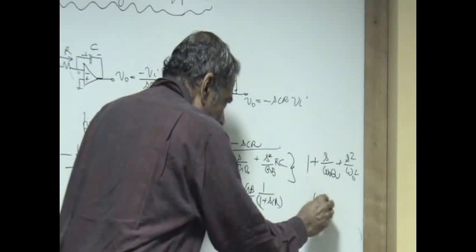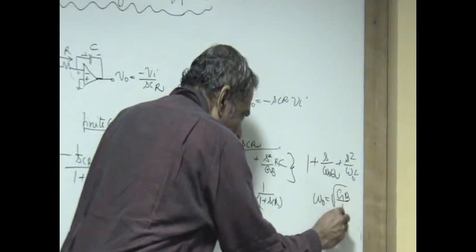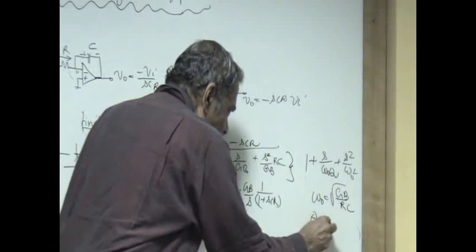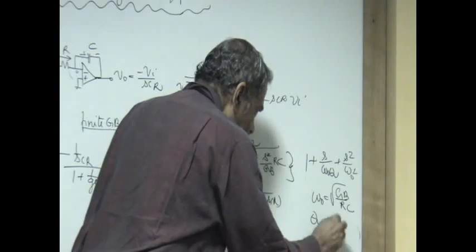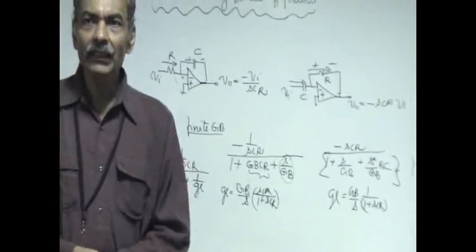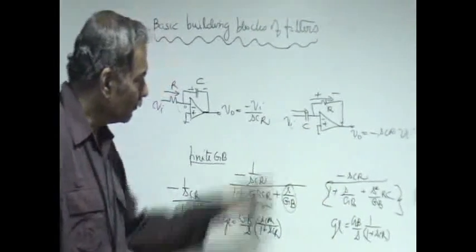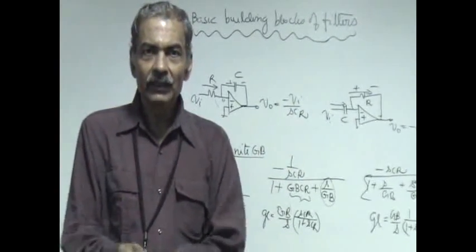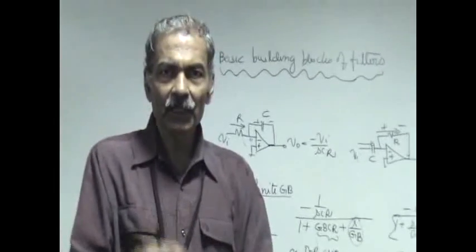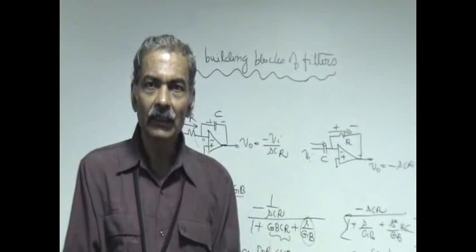The natural frequency ω₀ equals g_b divided by RC, and ω₀ times Q equals g_b, so Q equals g_b times RC. This means the system is underdamped and will start ringing the moment there is any disturbance. Whenever there is any disturbance — even somebody starting a scooter causing a pickup voltage — the sudden change will cause the output to ring at the natural frequency.